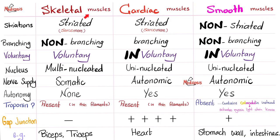Comparing the three types: skeletal muscles are striated, non-branching, voluntary, multinucleated, and supplied by the somatic nervous system. Cardiac muscles are striated, branching, involuntary, uninucleated, and supplied by the autonomic nervous system. Smooth muscles are non-striated, non-branching, involuntary, and uninucleated, supplied by the autonomic nervous system — and in the case of the gut, the enteric nervous system. If you cut the nerve fiber, skeletal muscles cannot contract on their own, but cardiac and smooth muscles can — cardiac due to automaticity, smooth due to the enteric nervous system. Troponin is present in skeletal and cardiac muscles but absent in smooth muscles.